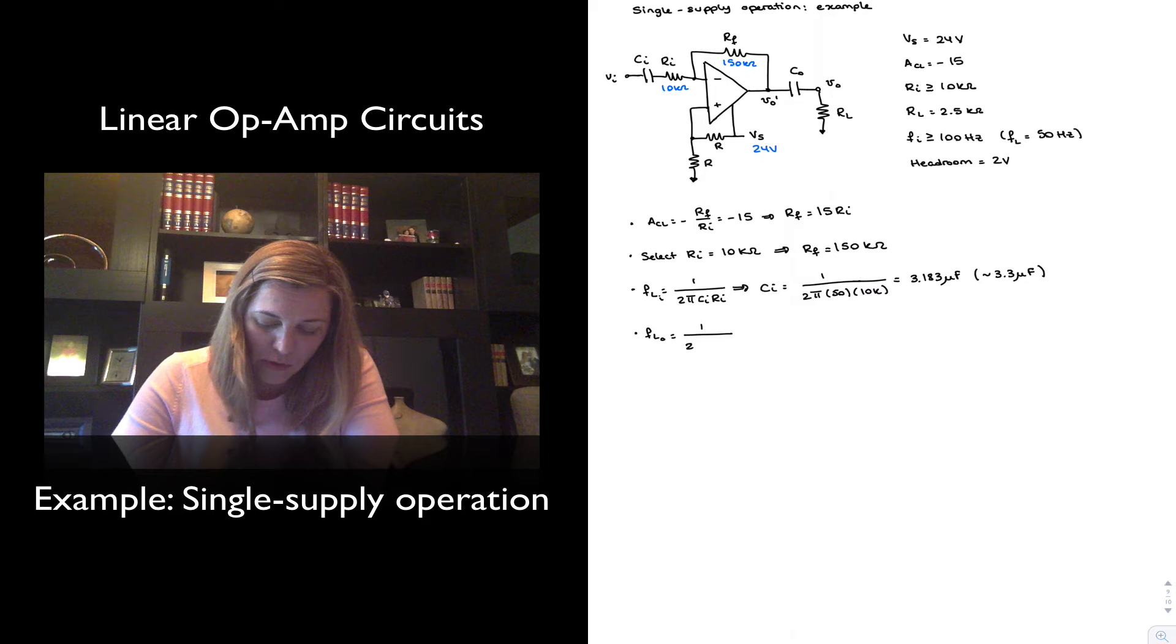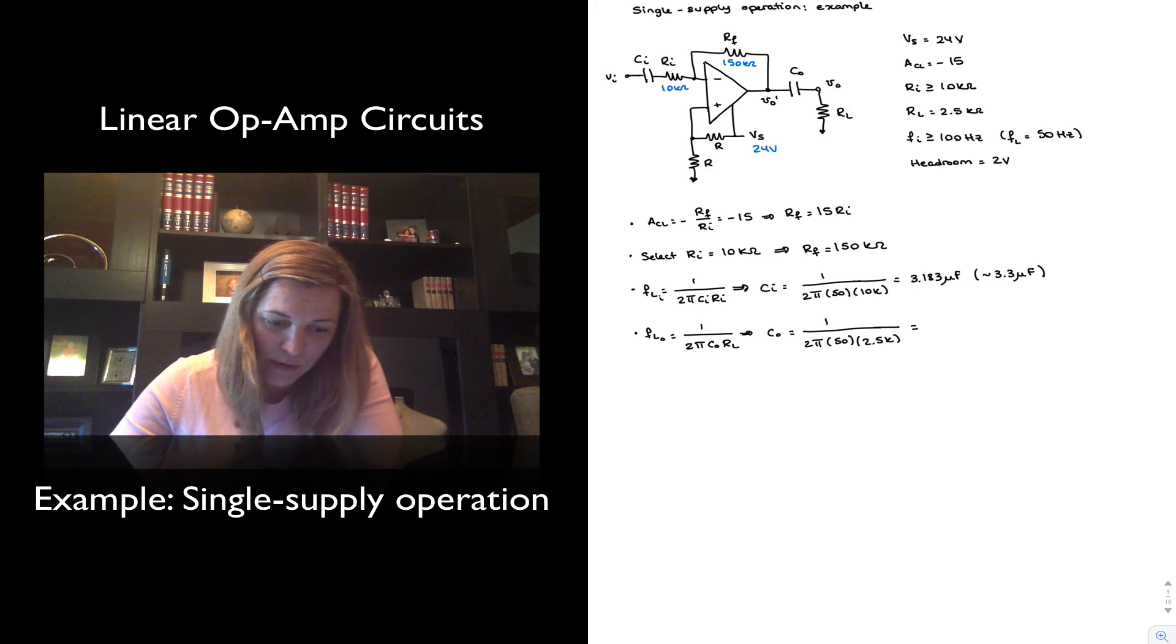This will be 1 over 2π C out, in this case RL, so I can calculate my C out as 1 over 2π FL, which I'm going to say is 50, times RL is 2.5 kΩ. And I came out with 12.7 μF. So let's imagine that I wanted to pick 15 μF.